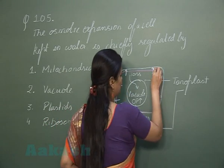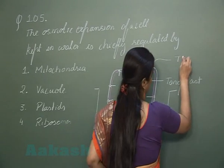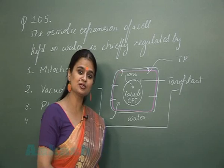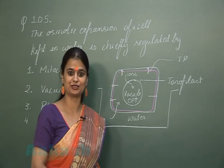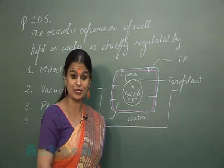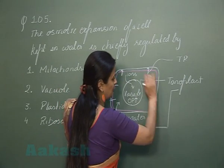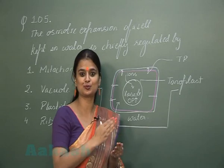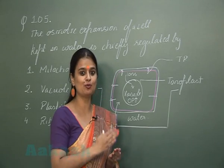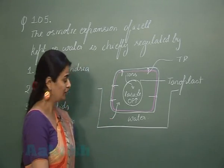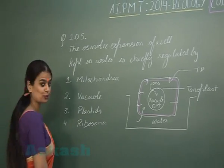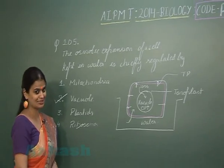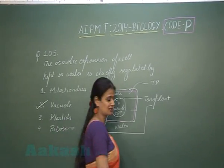So you know this very well, the pressure which is exerted by the protoplasm on the wall is known as turgor pressure. And due to this pressure, there is expansion of the cell which occurs. So it is the vacuole which is responsible for the osmotic expansion of the cell. So the right answer for question number 105 is option number 2. So let us discuss question number 106.